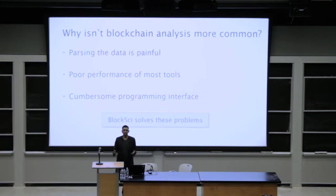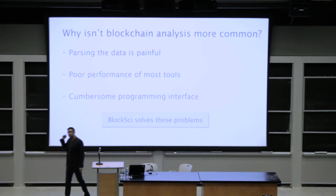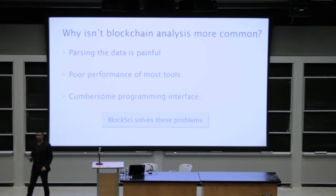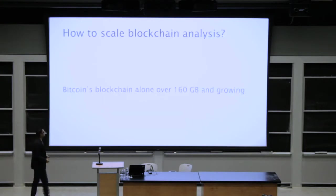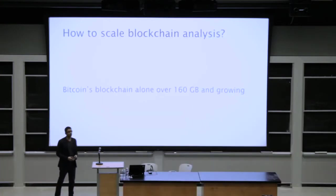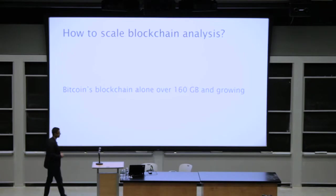With BlockSci, we set out to solve these problems and make it as easy as possible, as fast as possible, and as expressive as possible. The first question you might have is: how do you get good performance? Blockchain data is big data — the Bitcoin blockchain alone is over 160 gigabytes and growing quickly. We support a number of different blockchains. So how do you do this at scale?